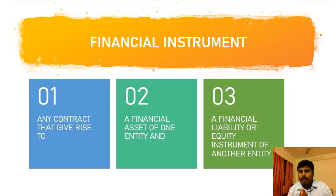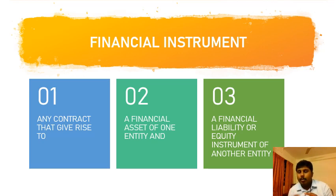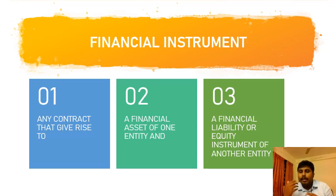In order to classify an item as a financial instrument, first it should be based on some contract — there should be some contractual obligation or contractual rights. Second, it should give rise to a financial asset in the books of one entity and a corresponding financial liability or equity in the books of another entity. We need to understand four terminologies: what is the meaning of 'contract,' what is the meaning of 'financial asset,' what is the meaning of 'financial liability,' and what is the meaning of 'equity instrument.'